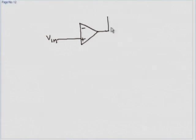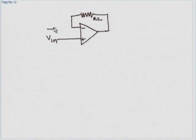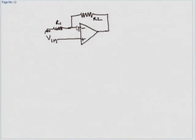I can draw any amount of current from the output — that is not a problem. So I connect R2 here and provide a path for that current by connecting R1 here and grounding it. It is very similar to the previous circuit. However, the input is now directly applied to the positive input. The feedback is still through R2, but R1 goes to ground rather than to the input.